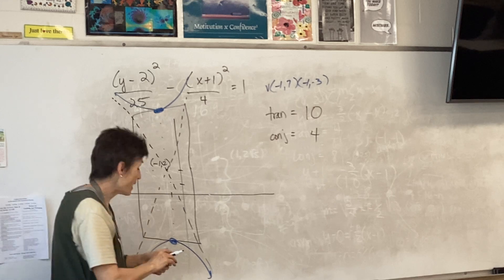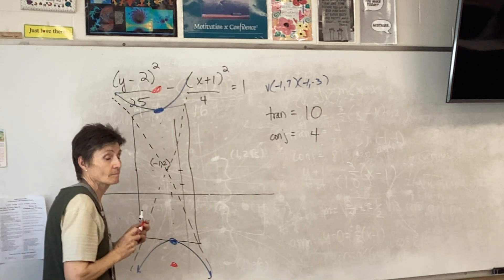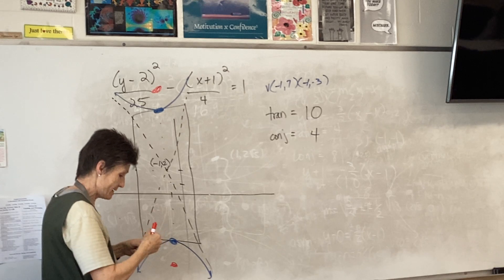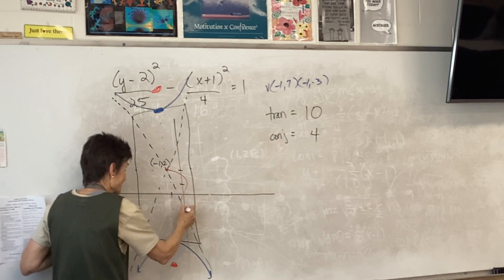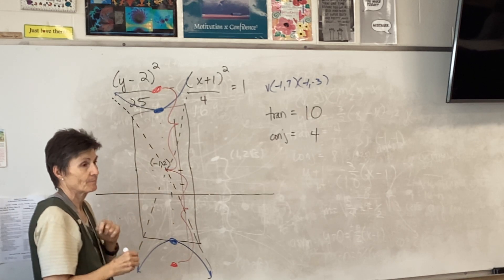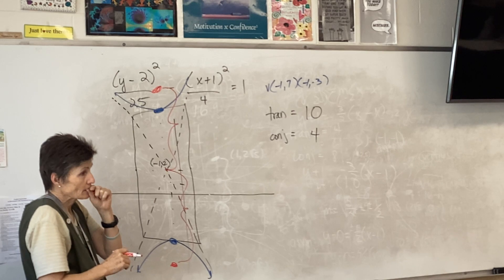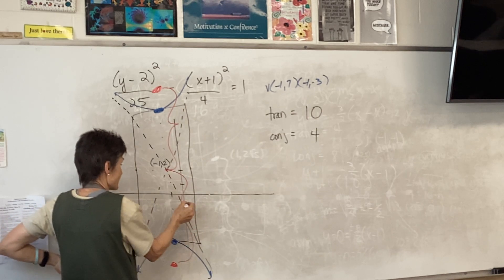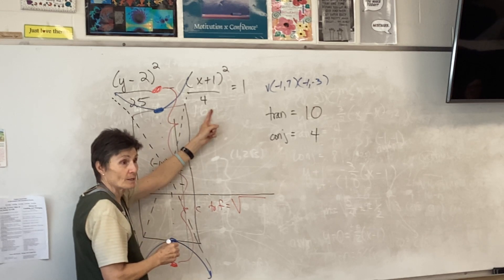The transverse axis is also where your foci are. I'm going to find where those red points are by starting at my center and going up some distance and down some distance. Mark in your notes carefully — it's measured from the center. I need to know the distance center to focus, so I look at my denominators: 25 and 4. That's going to be the square root of 29.